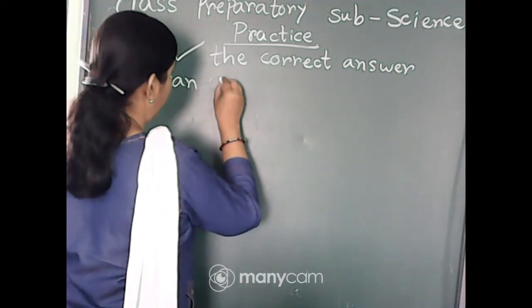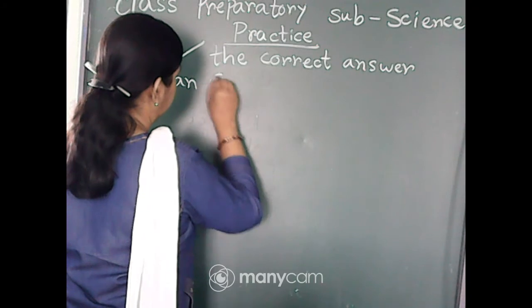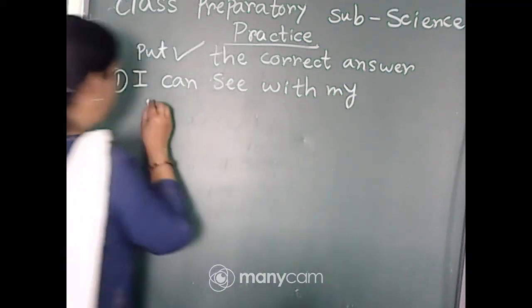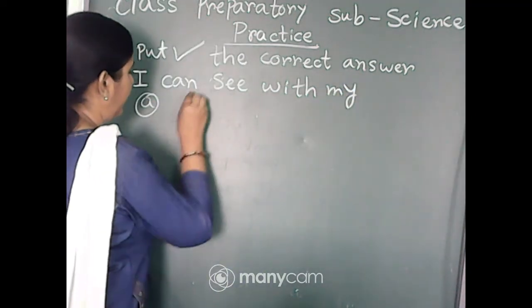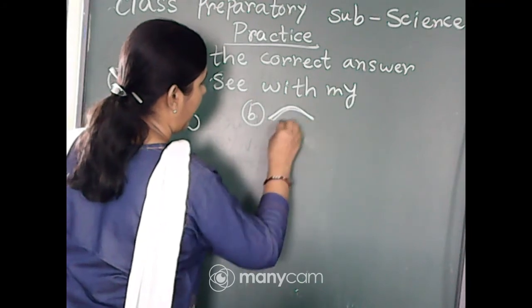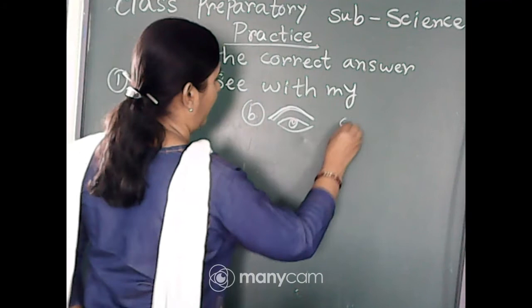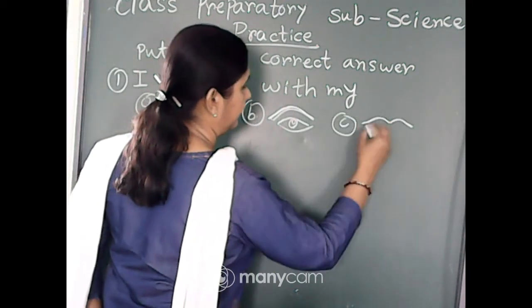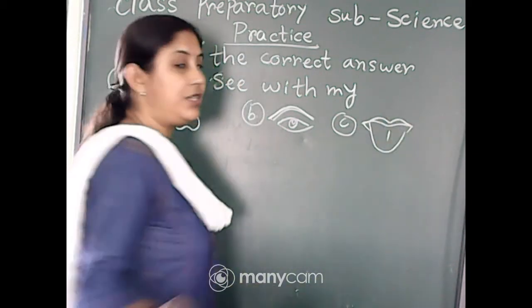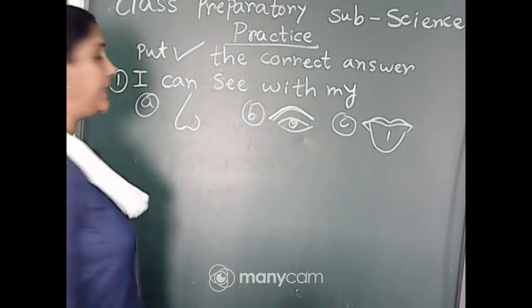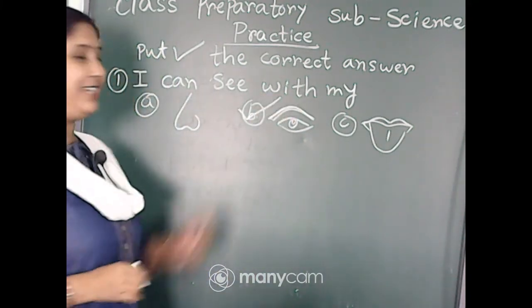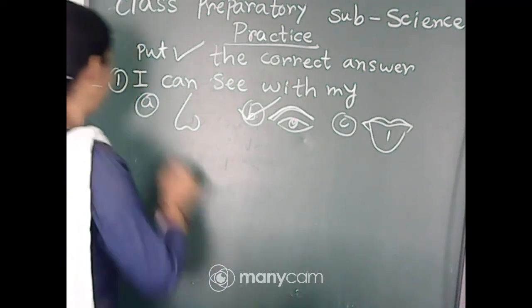We will start with number one: I can see with my... Option A is nose, option B is eye, and option C is tongue. Here we have three options. So I can see with my eyes, so B eyes is the correct answer.